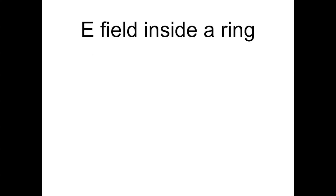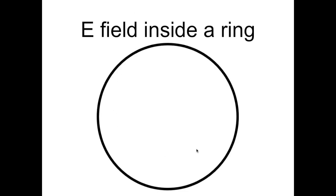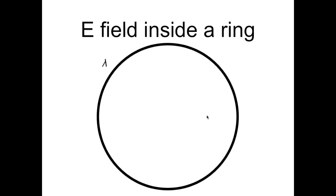The electric field inside a charged ring. Here we'll calculate the electric field inside a charged ring. So here's a ring, and let's suppose it has a uniform linear charge density lambda. Consider a location inside the ring, indicated by this dot. What's the electric field here, and where does it point?